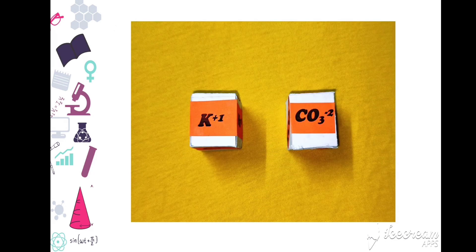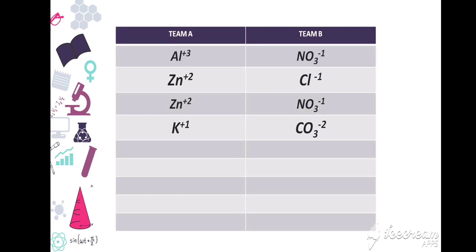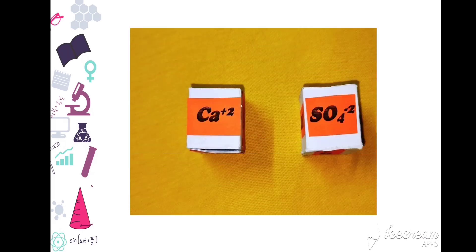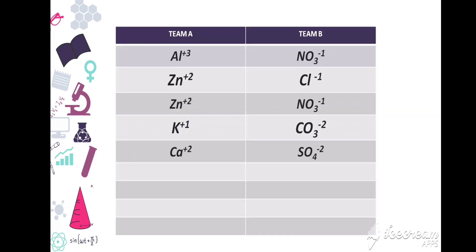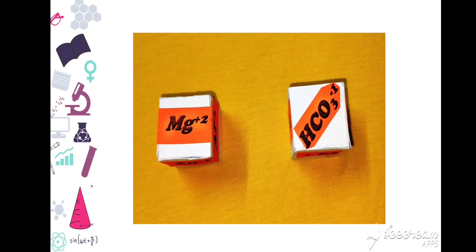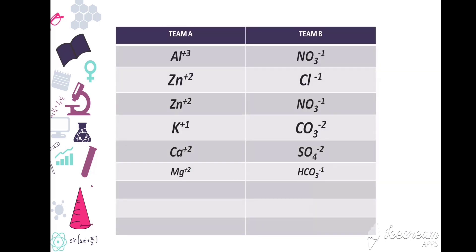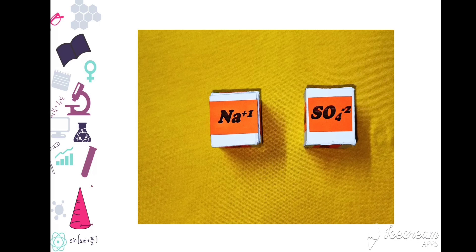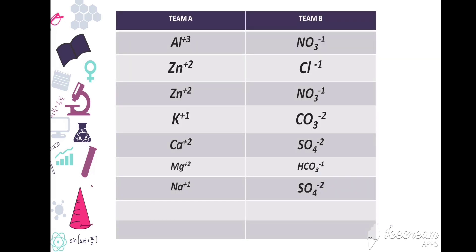Next, K plus 2 and CO3 minus 2. Noted in the table by both teams. Next chance: Ca plus 2, SO4 minus 2. Noted in the table by both teams. Next chance: Mg plus 2, HCO3 minus 1. Noted in the table. Next chance: Na plus 1, SO4 minus 2. Noted in the table by both teams.